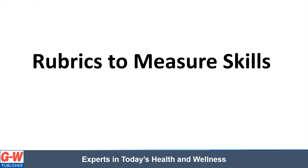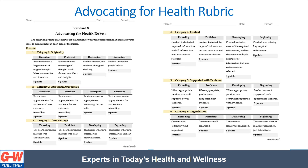Here are some additional rubrics to measure skills. Measuring skills is not always easy. If you have an advocacy project and you just need an example of a way of assessing students and their advocacy skills, here is an example of a rubric for that, or an assessment scale using standard-based grading.